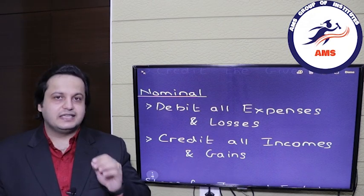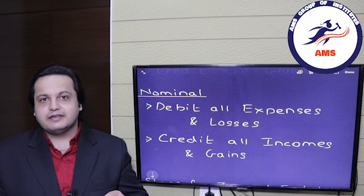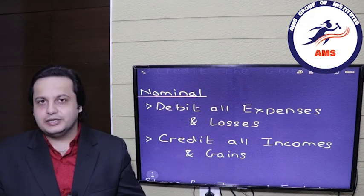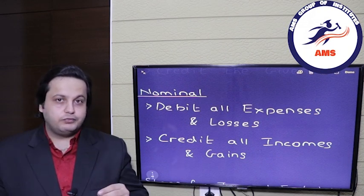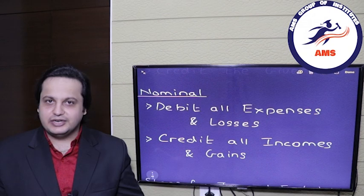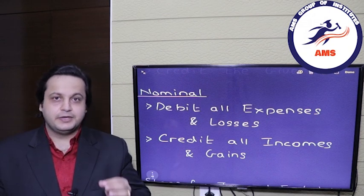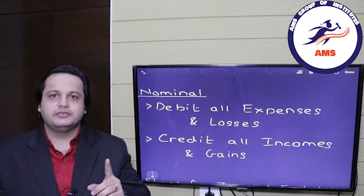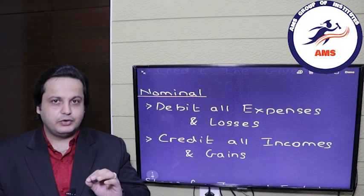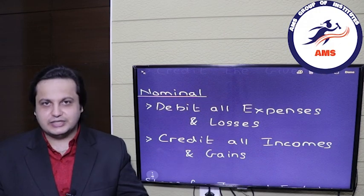So we have seen the types of accounts and the golden rules. Now we can go forward with the journal entries. But first there are a few steps which you have to follow to successfully complete a journal entry.